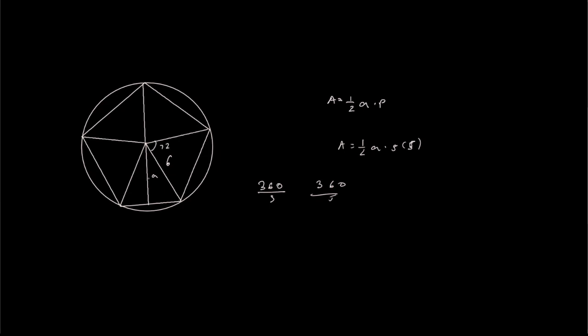However, since we're trying to solve for one triangle, that's a right triangle, since we split one of the triangles in half, we do 72 divided by two, and we get a value of 36. So we know this angle is 36.